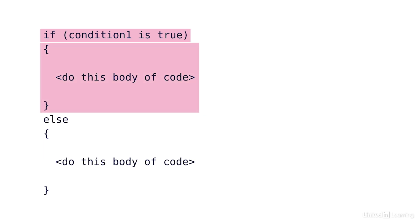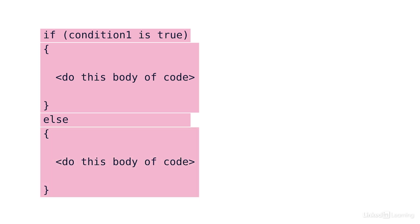If your body of code to be executed is only one line, you can also eliminate the curly brackets. If you have more than one line to be executed in the body of code, you need curly brackets around it to keep them together.